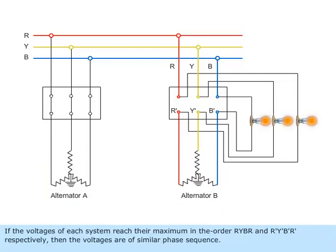If the voltages of each system reach their maximum in the order RYBR and R'Y'B'R' respectively, then the voltages are of similar phase sequence.